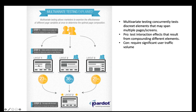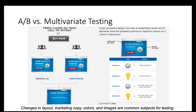Multivariate testing concurrently tests different elements. For example, with three layouts: layout one has content with a right sidebar; layout two has content with no sidebar but an image to the left; layout three has content on top with a sidebar and image on the bottom. Layout two, with the highest conversion rate of 36%, is the winner. The advantage of multivariate testing is that you can test interactive effects; the disadvantage is that it requires significant user traffic volume.